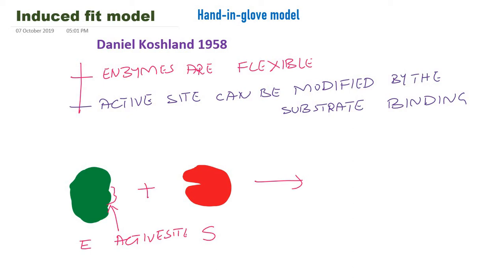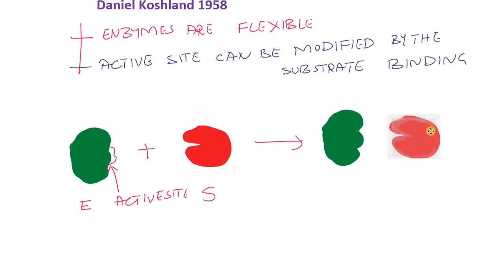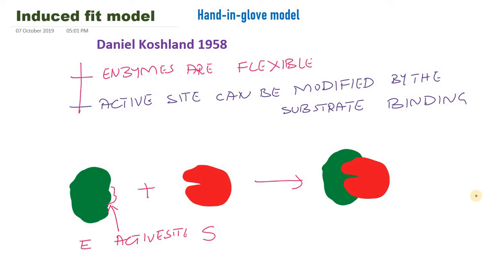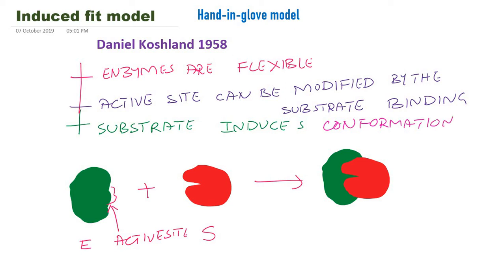Just like a glove taken from the glove box — it is not pre-shaped and can be folded in different shapes, but when you put your hand in the glove it conforms to your fingers and hand. Similarly, when the substrate binds to the enzyme, it induces a conformational change so that the substrate can fit easily to the active site. The hallmark of the hand-in-glove model, or Koshland model, or induced fit model, is that the substrate induces a conformational change in the enzyme.